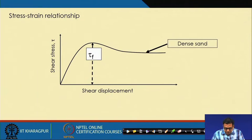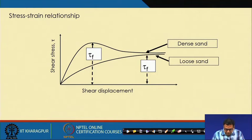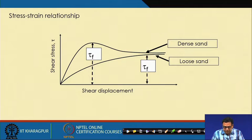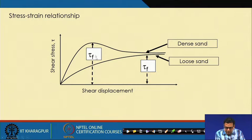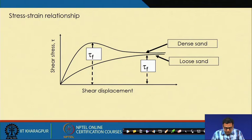After completion of the test we get the shear stress versus shear displacement relationship. For dense sand we get a peak value — a failure load or peak load — whereas for loose sand there is no peak value; the stress increases as displacement increases. Finally, both curves converge toward each other after some displacement. That converged strength is called the residual strength, and the higher value is the peak load for dense sand. This is the typical shear stress versus shear displacement curve for loose sand and dense sand.